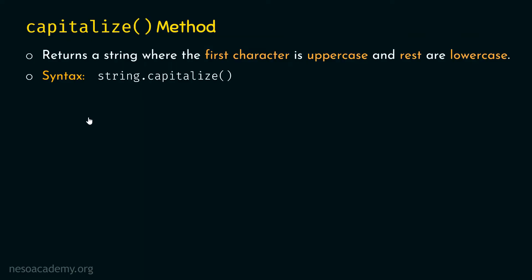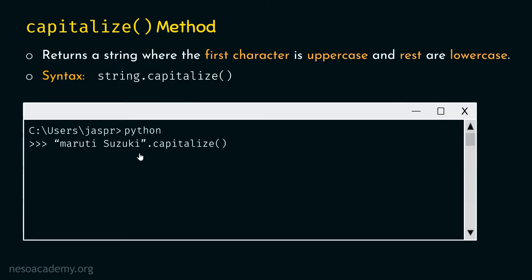Let's go to the command prompt and type: 'maruti suzuki'.capitalize() — here the string has a small 'm' at the beginning, which will be capitalized. The result will be 'Maruti suzuki', where the first letter is uppercase and the rest of the characters remain lowercase. Any uppercase character after the first character will be converted to lowercase.